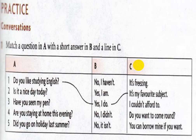Here we match a question in A with a short answer in B and a line in C. Number one: 'Do you like studying English?' — 'Yes, I do. It's my favourite subject.' We answer with 'do' because the question started with the auxiliary verb 'do'.